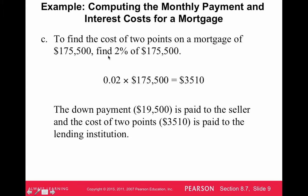The cost of the two points is 2% of what you're borrowing. So 2% of $175,500 is $3,510. That's how much you pay to the lending institution at closing. The down payment goes to the seller, and the cost of the two points goes to the lending institution.